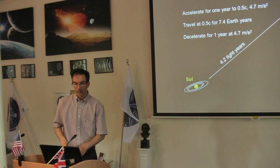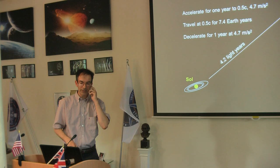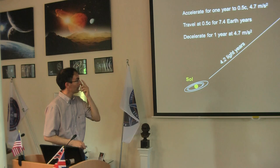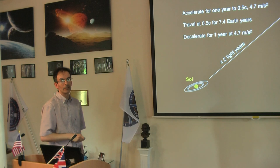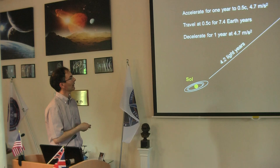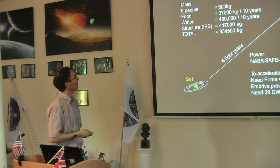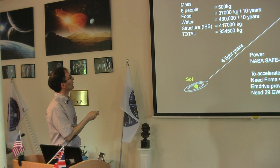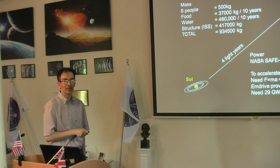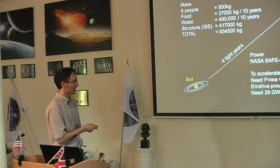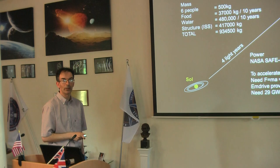Okay, so if it's true that quantized inertia produces thrust in this way, what does that mean for interstellar travel? Well, I've taken the case study that we want to accelerate for one year to half the speed of light. So we need acceleration like that. Travel at half the speed of light for 7.4 Earth years. We decelerate again near Proxima, and that will get you there in just under 10 years. Can the EmDrive do it? Well, I've taken some examples of mass. I've calculated the mass of the spacecraft. So you have six people, 5,000 kilograms. Food for 10 years, water for 10 years. The structure I've based on the space station, the International Space Station. The total is this. So to accelerate to half the speed of light in one year, you need this amount of force. The EmDrive provides this amount of force, which is quite small. So you need 29 gigawatts, which is quite a lot.